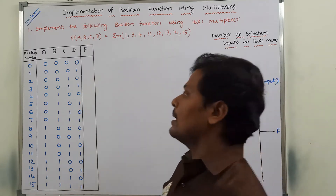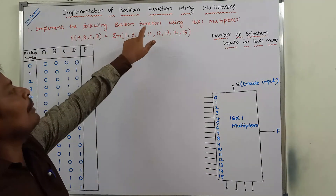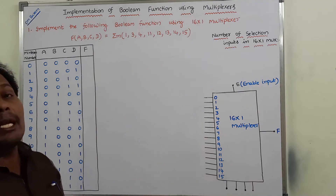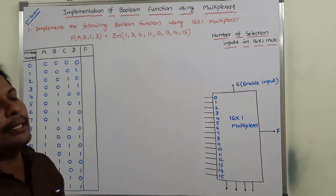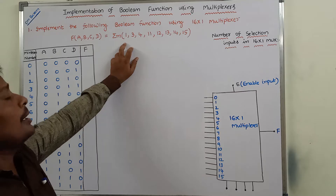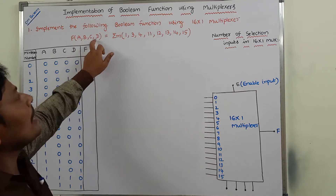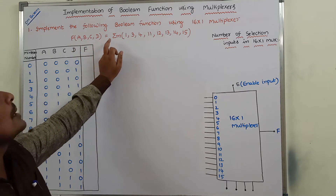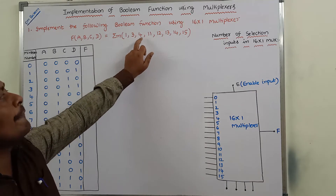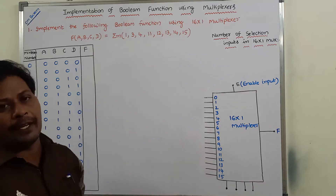The given problem is: implement the following Boolean function using a 16-by-1 multiplexer. The given Boolean function f(a, b, c, d) = Σm(1, 3, 4, 11, 12, 13, 14, 15).